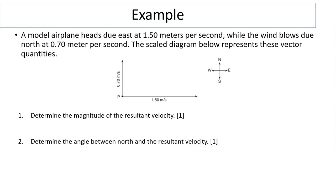Let's take a look at this example. A model airplane heads due east at 1.5 meters per second while the wind blows due north at 0.7 meters per second. The scaled diagram below represents these vector quantities. Determine the magnitude of the resultant velocity and the angle between north and the resultant velocity. We did this question before using drawings, by vector addition graphically.